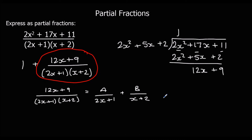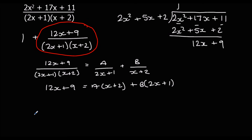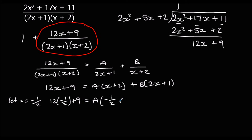We multiply through by the denominator: 12x + 9 = A(x + 2) + B(2x + 1). We eliminate B by letting x equal negative one-half: 12(−½) + 9 = A(−½ + 2), giving −6 + 9 = 3 equals 1.5A, so A is 2.